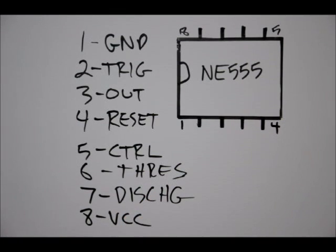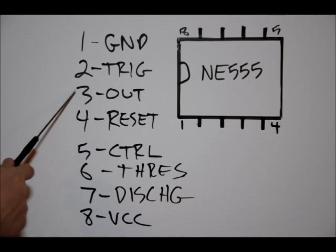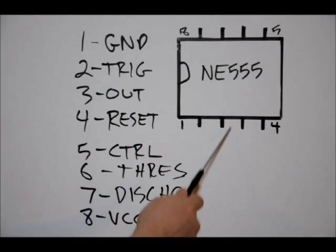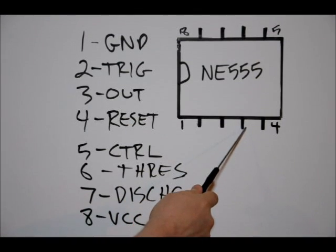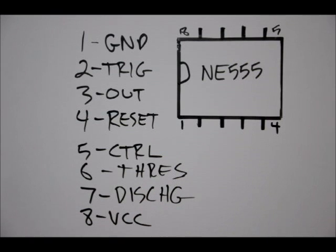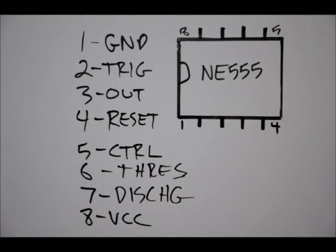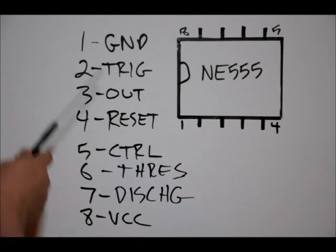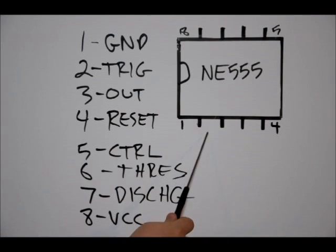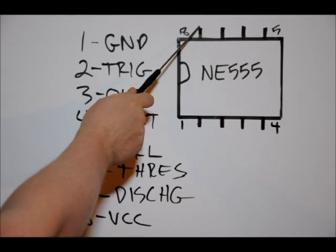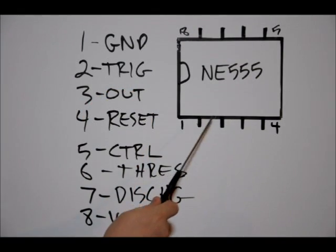Reset, pin four, we are going to use that, and we're going to do something really neat with it. We're going to create what's called a power on reset circuit, so that when you power on the circuit, the device doesn't automatically trigger. Three is our output. We're going to be feeding this signal to an LED so we know when the pulse is actually being triggered. To trigger, we're going to use pin two to trigger the pulse, and ground, of course, is our ground line.